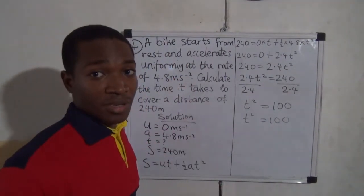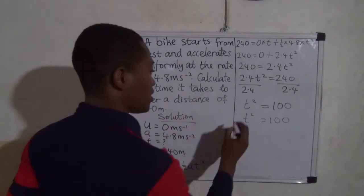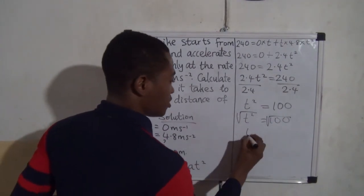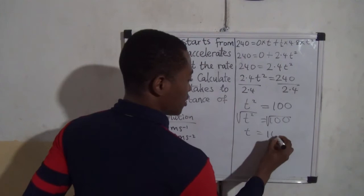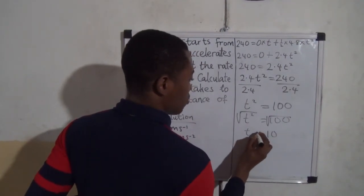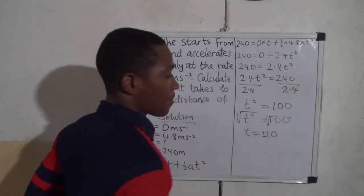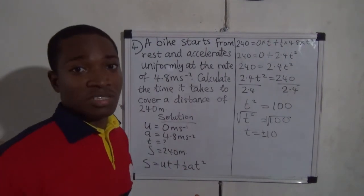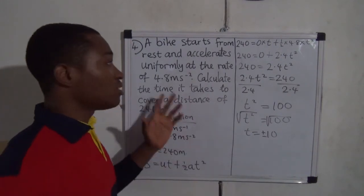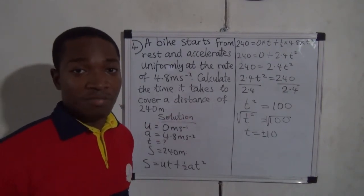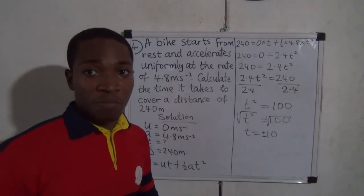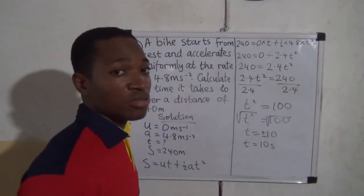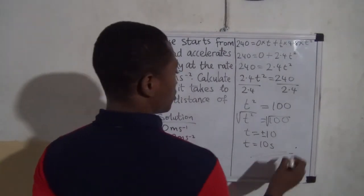Since t² = 100, to find t we take the square root of both sides. The square root of t² is t. The square root of 100 is plus or minus 10, but time cannot be negative because we don't read time backwards — this is a real-life situation. So our answer is t = 10 seconds, since time cannot be negative in this situation.